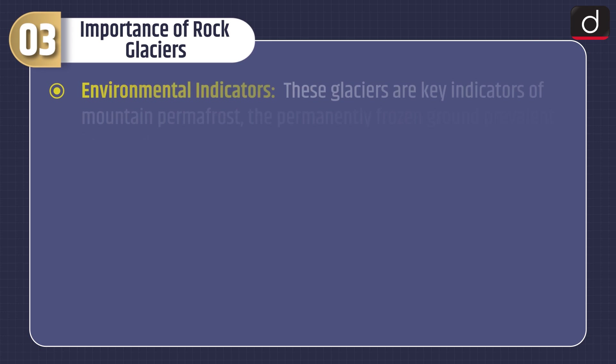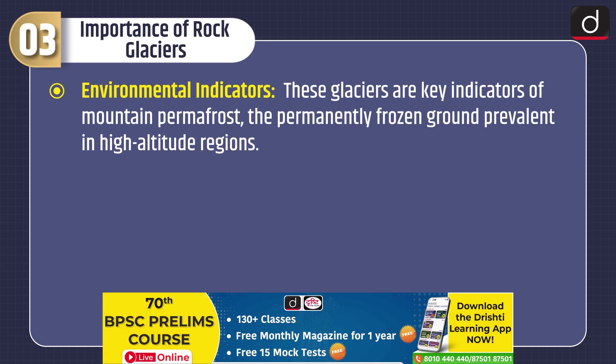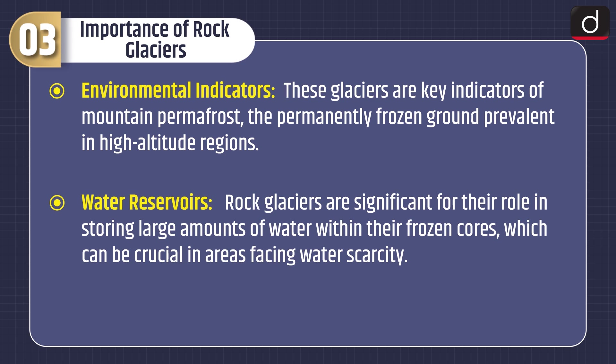Regarding the importance of rock glaciers: first, as Environmental Indicators, these glaciers are key indicators of mountain permafrost — the permanently frozen ground prevalent in high altitude regions. Second, as Water Reservoirs, rock glaciers are significant for their role in storing large amounts of water within their frozen cores, which can be crucial in areas facing water scarcity.